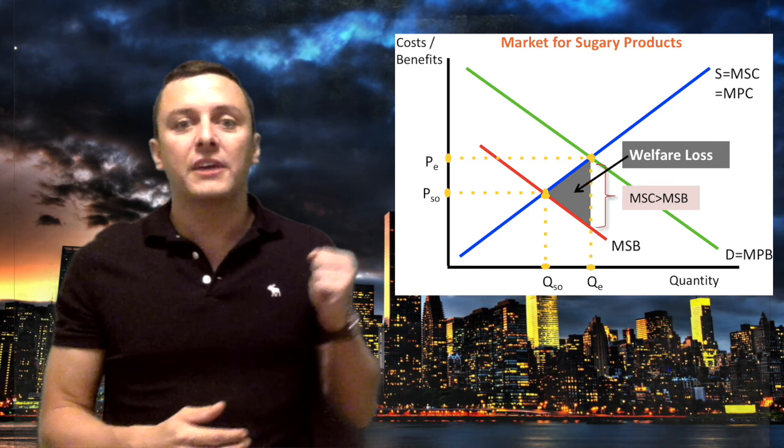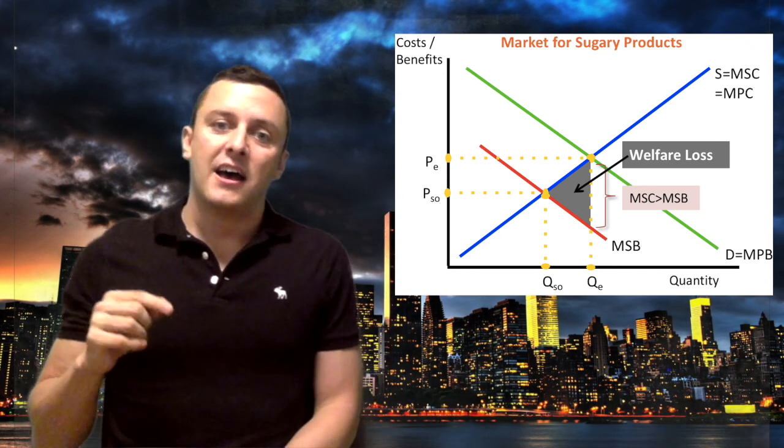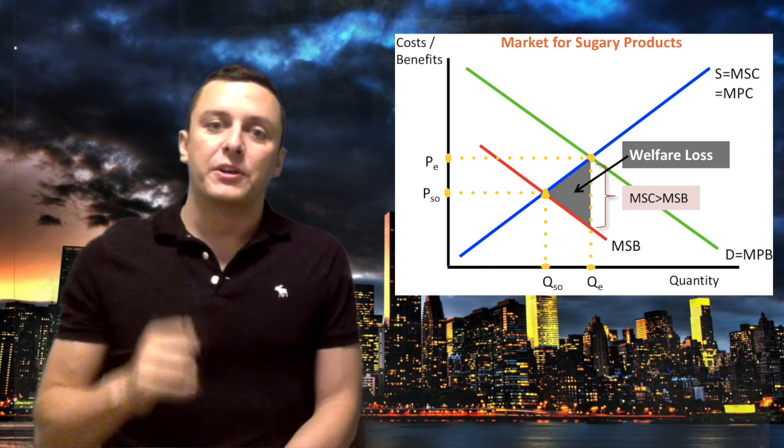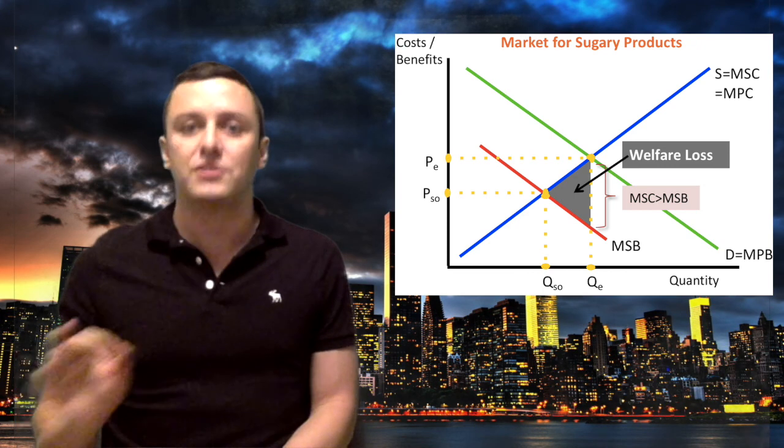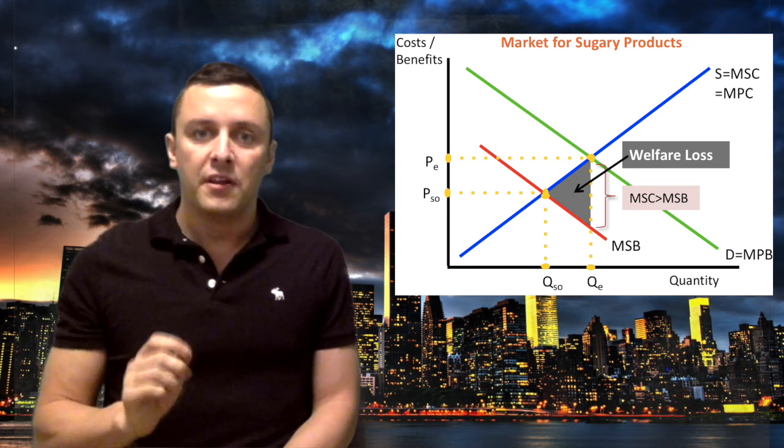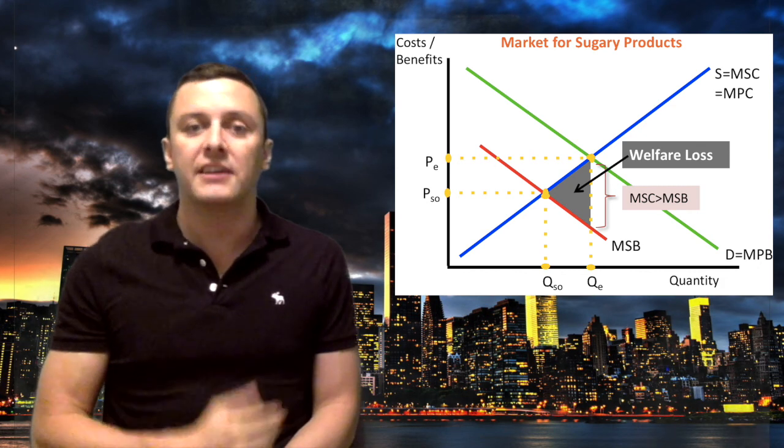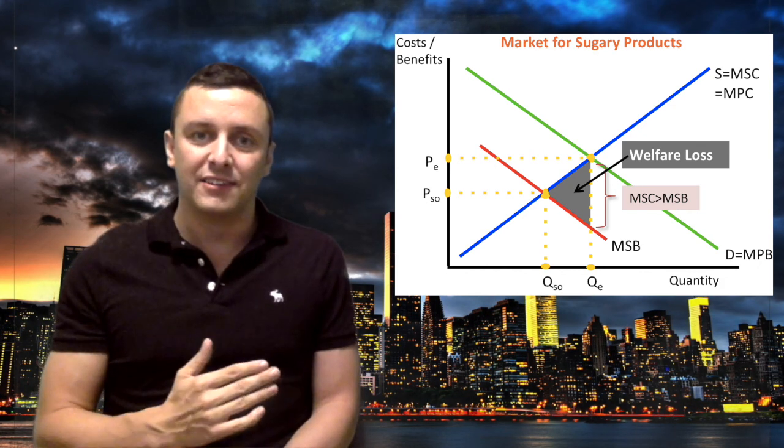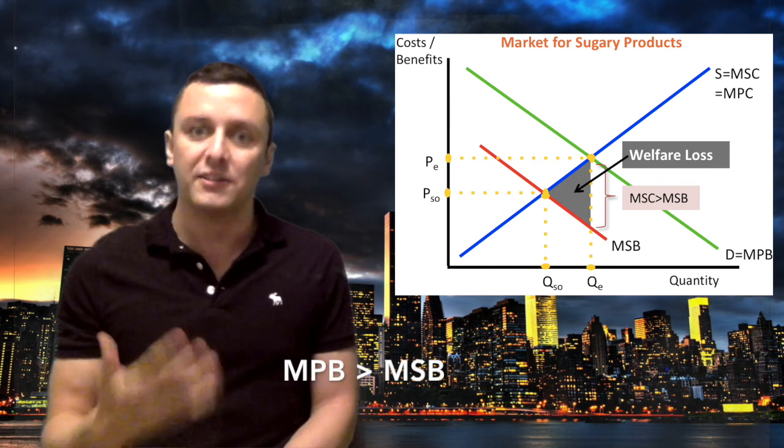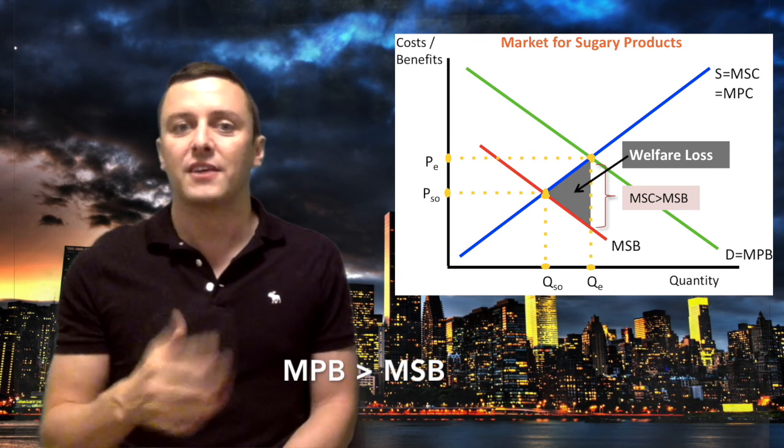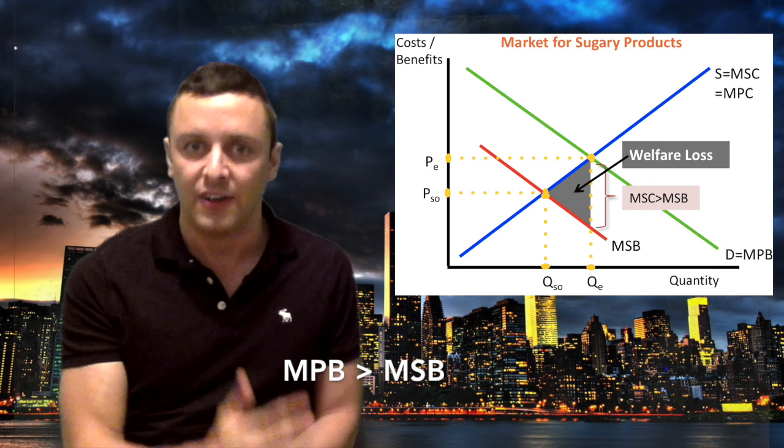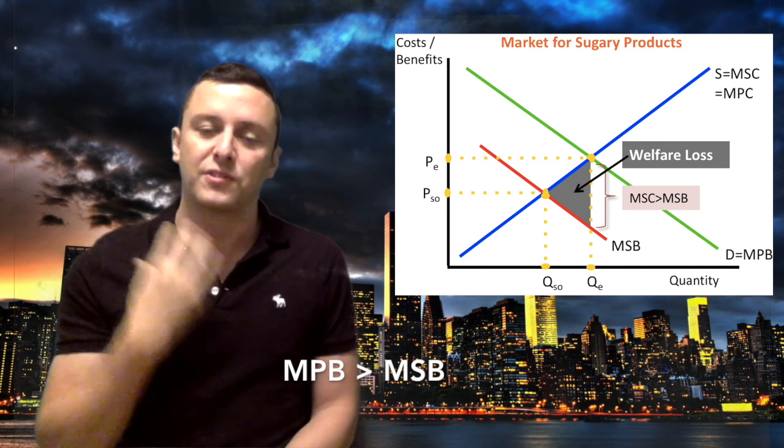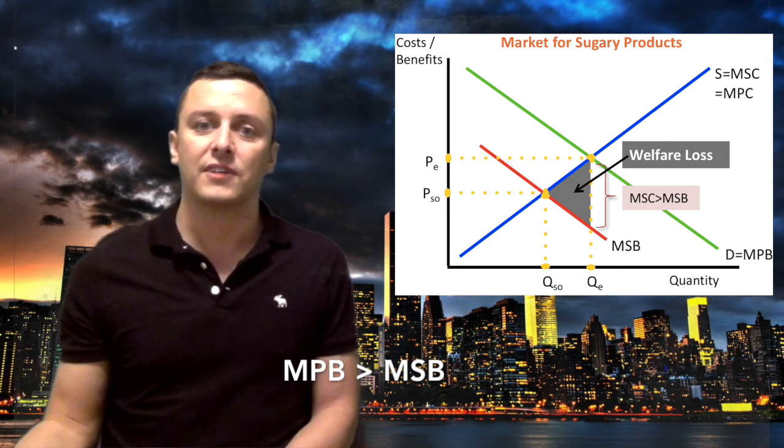Once we've defined that and explained why sugar is a market failure, we can then move on to the diagram. This diagram shows negative externalities of consumption. Now don't get the two confused - consumption and production. Just remember that when it's a consumption externality, there are two demand lines because the demanders are the ones who are consuming the goods. Lots of students get confused with this. There are no negative externalities for the production of sugar - it's the actual act of consumption that creates negative externalities on society.